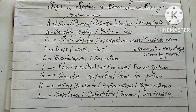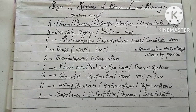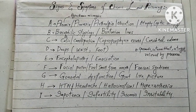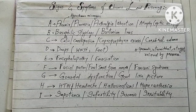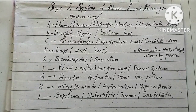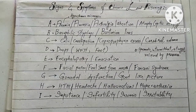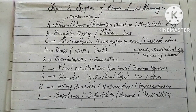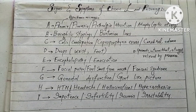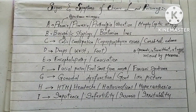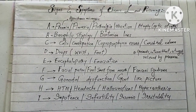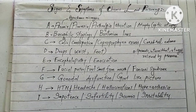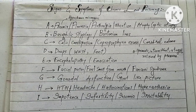C stands for colic. There is a characteristic lead colic — pain that is spasmodic and intermittent in nature, especially at night, and relieved by pressure. There is also associated constipation, coproporphyrin excess, and cerebral edema. There are also two characteristic drops: wrist drop and foot drop, due to degeneration of nerves and muscle atrophy.